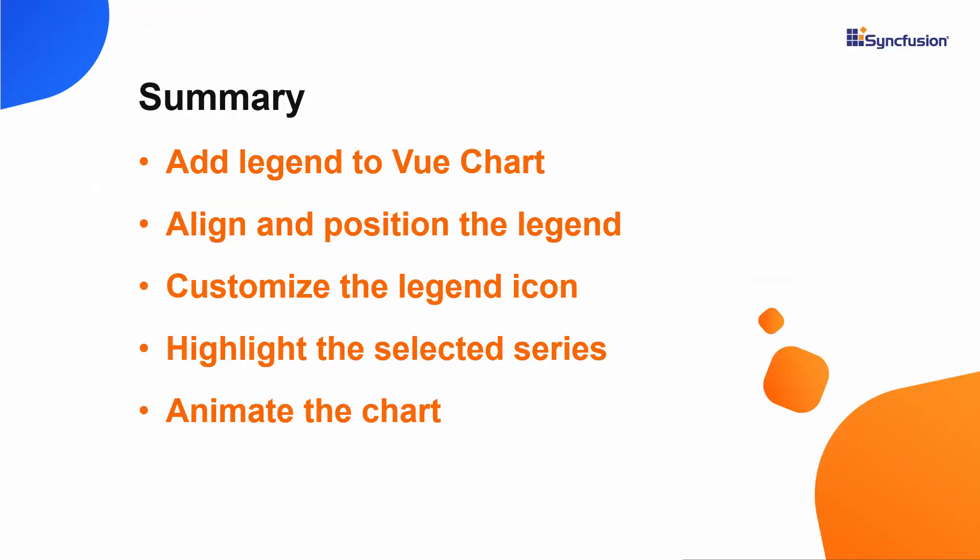Let me summarize the main points we discussed in this video. We have seen how to add a legend to the Syncfusion Vue charts, and also how to position and align the chart legend. We discussed how to change the legend icon, how to highlight the selected series in the chart, and finally how to animate the chart and customize the size of the legend. If you would like to see a working example, you can download one from the GitHub link in the description below. I have also provided a link where you can see if you qualify for a free license key to use our Vue products through our community license. If you found this video useful, don't forget to click the like button and subscribe to our channel. Thanks for watching.